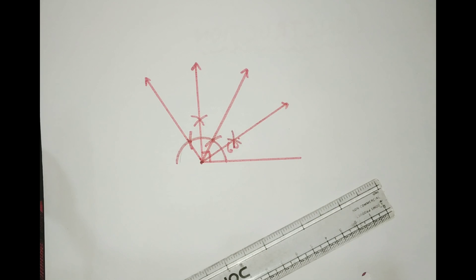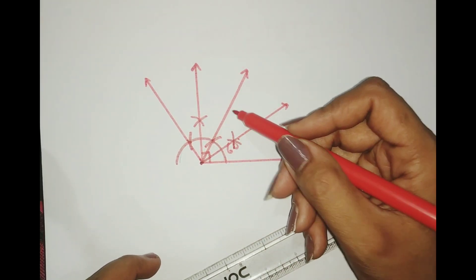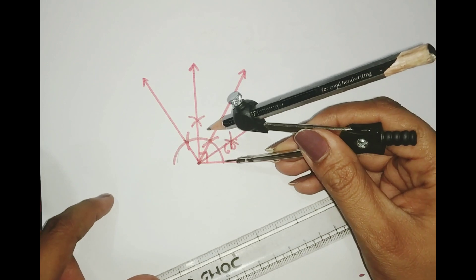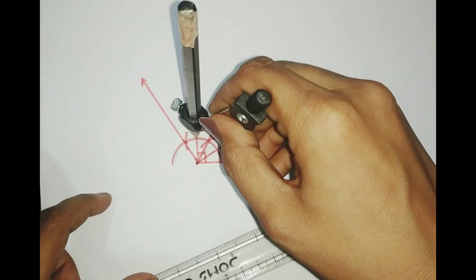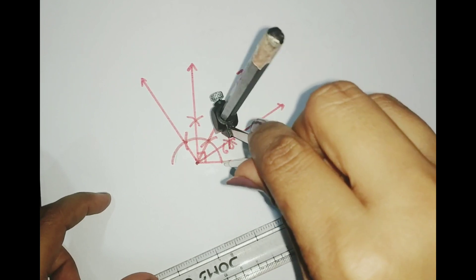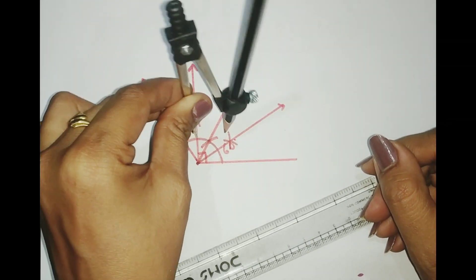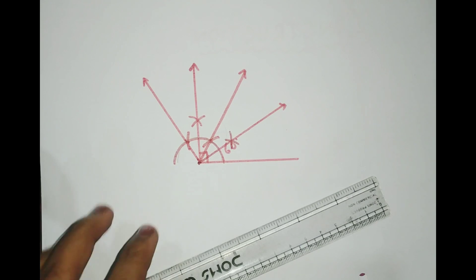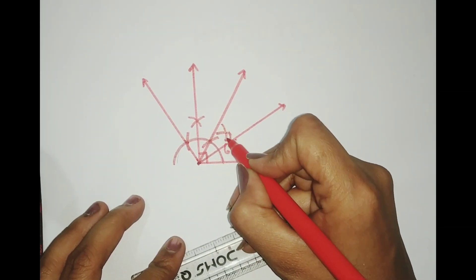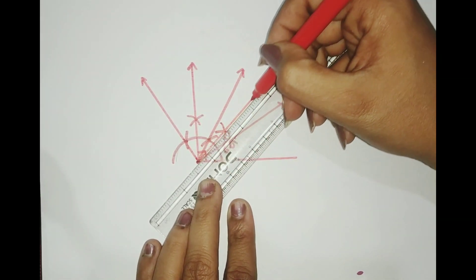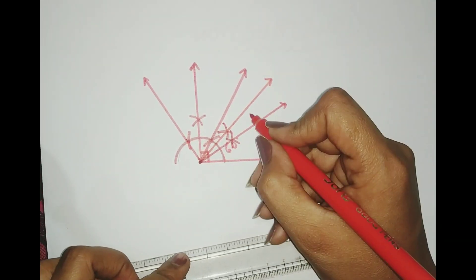So we've made 60°, 90°, 120°, and 30°. Now from this 90 degrees I can also make 45 degrees. For that I need to adjust the compass — I'll measure from this point to this point, cut an arc here, then keep my compass at the other point and cut another arc. You can see I've got an intersection, and if I draw a ray through that point, that gives me 45 degrees.